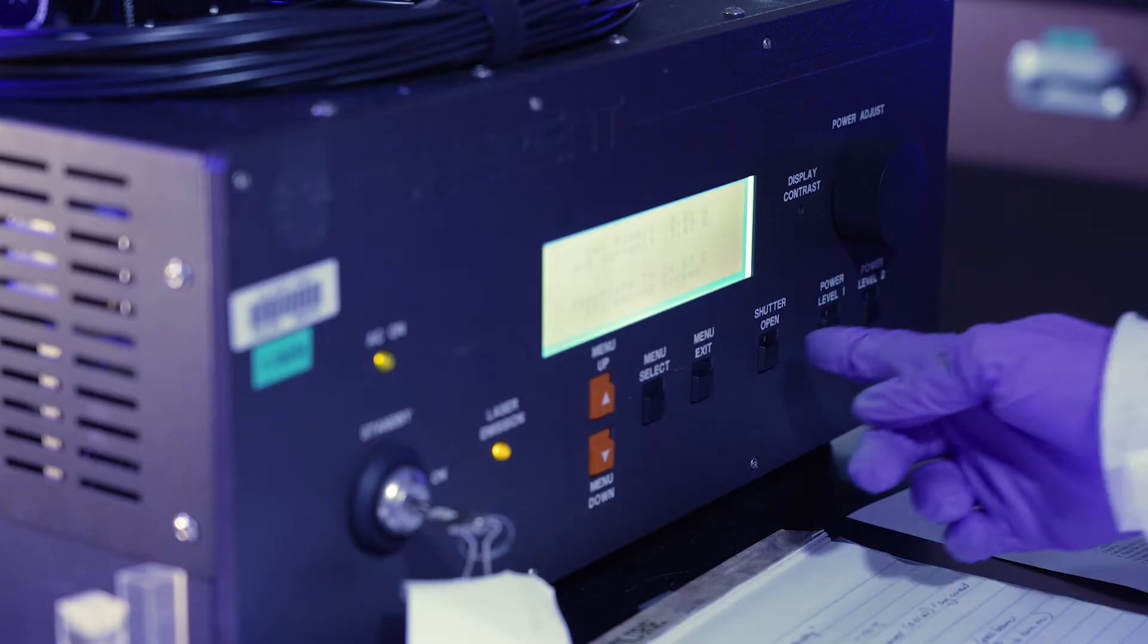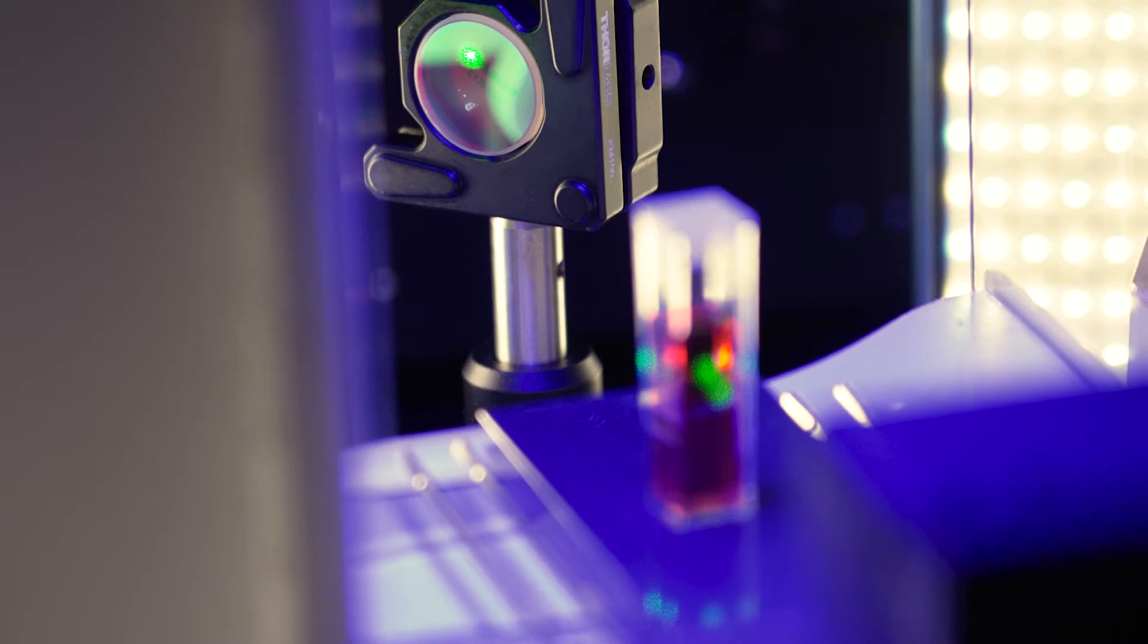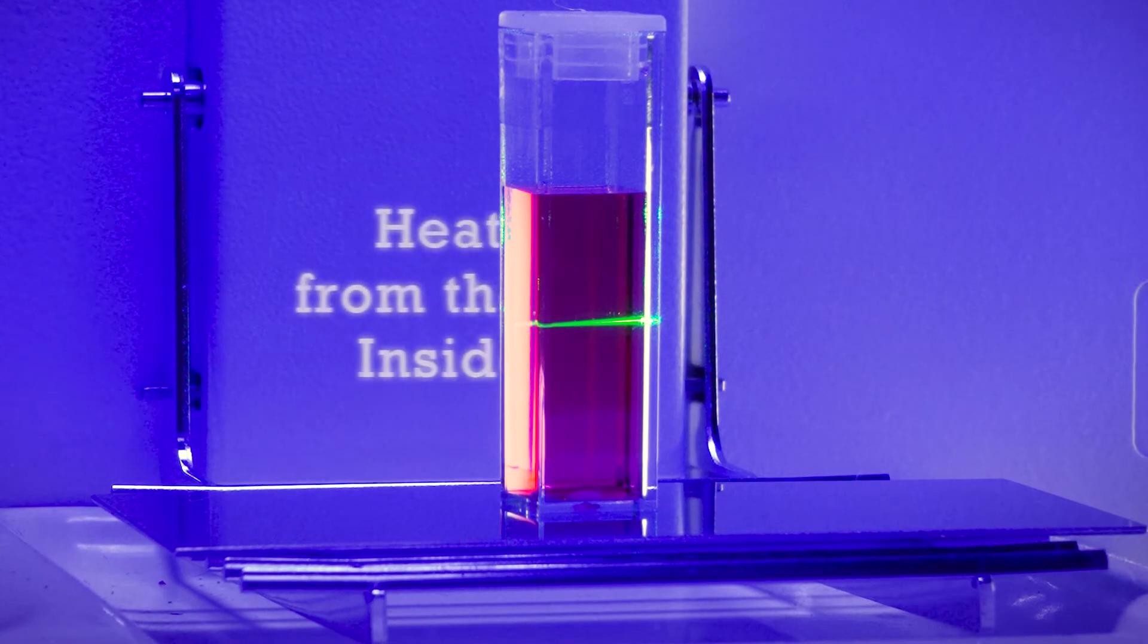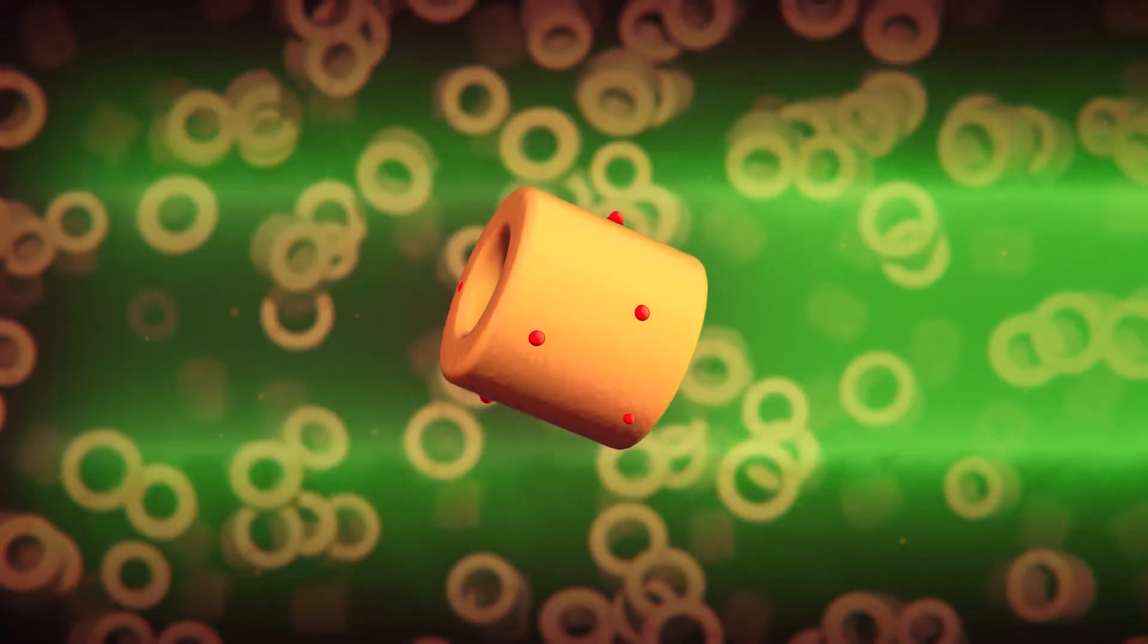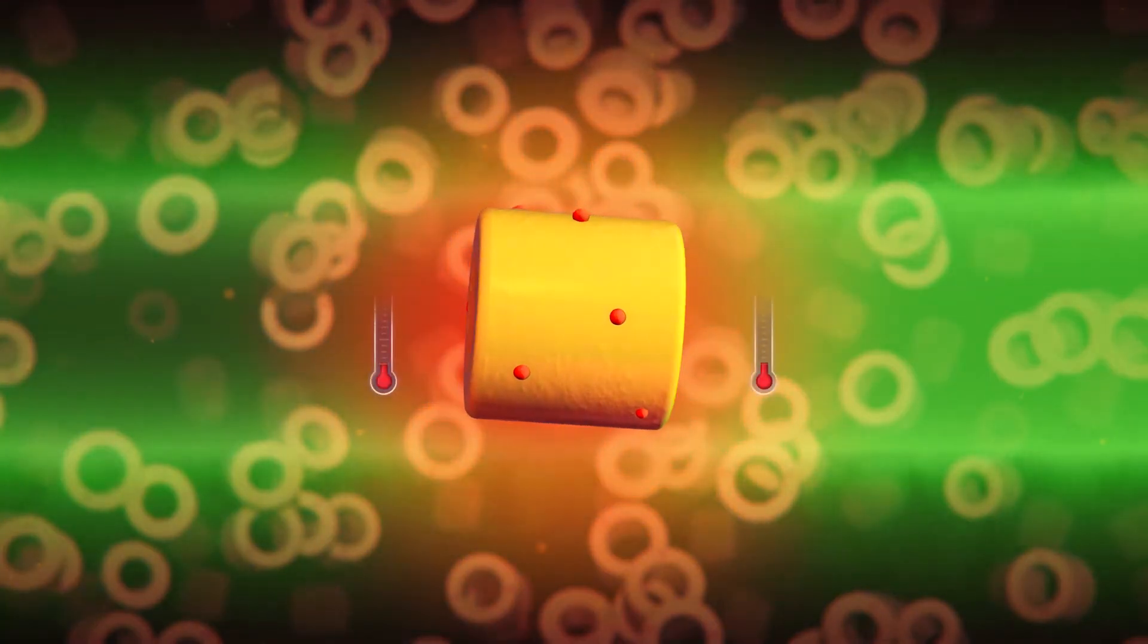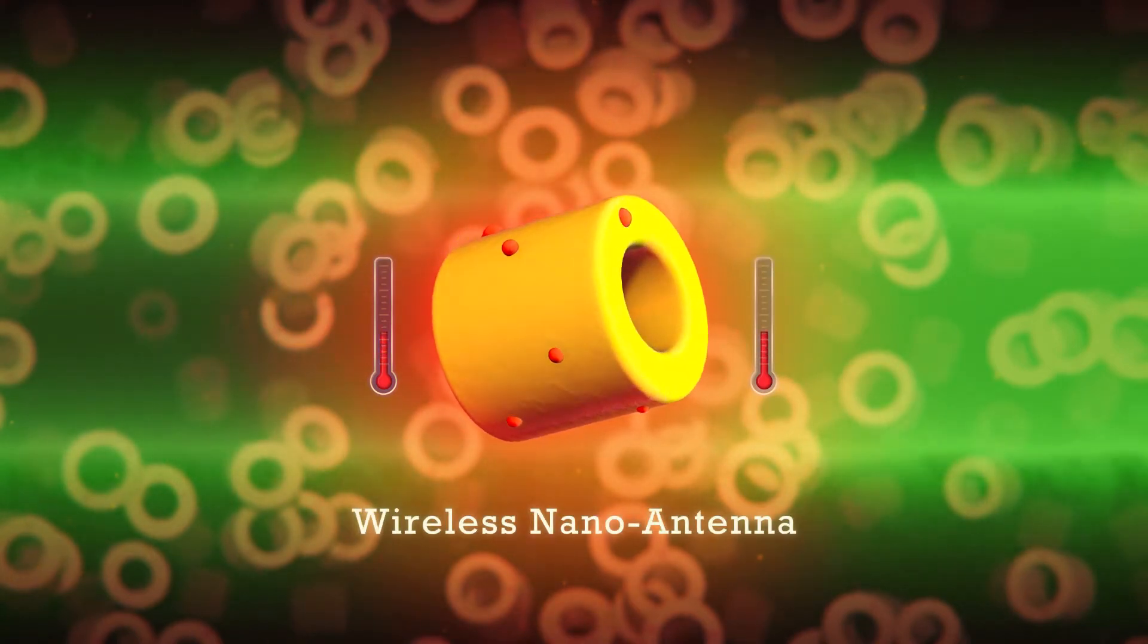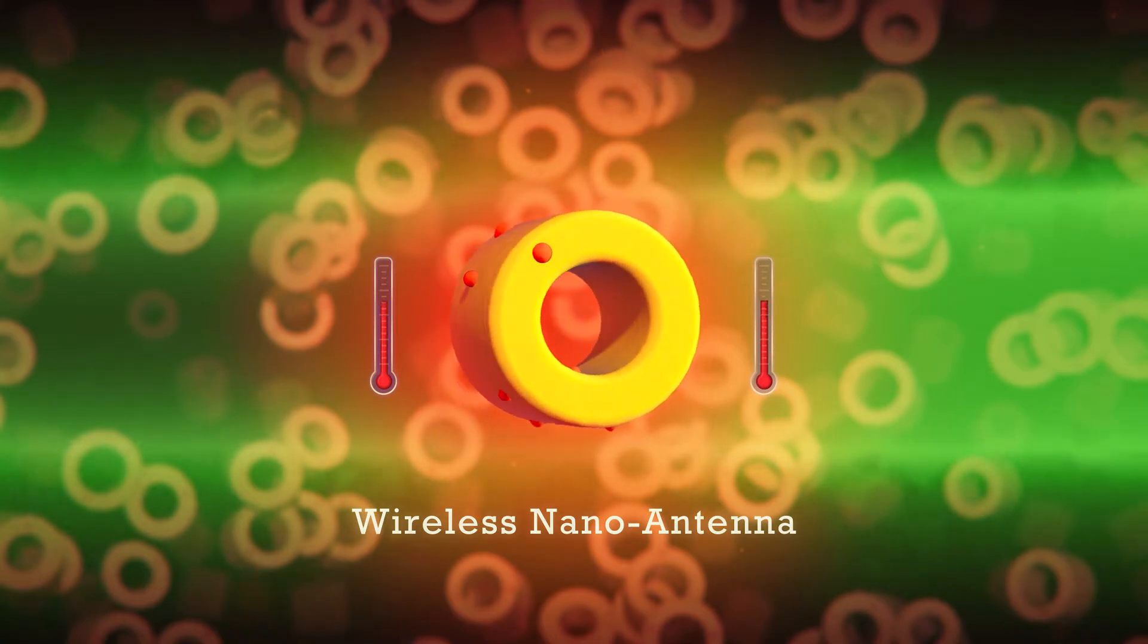Conventional bulk heating methods like conduction, convection, and radiation heat from the outside environment. SRNL's non-contact technology heats from the inside, starting uniformly at the nano level and expanding to the macro environment, really almost acting as a wireless nano antenna delivered via a field of plasmonic light or magnetically.